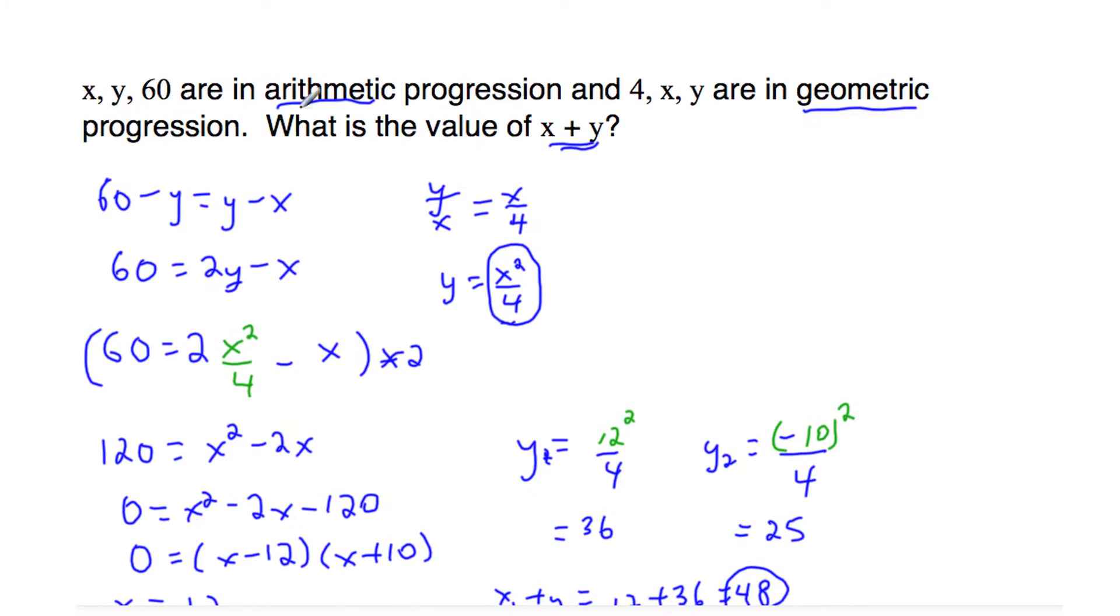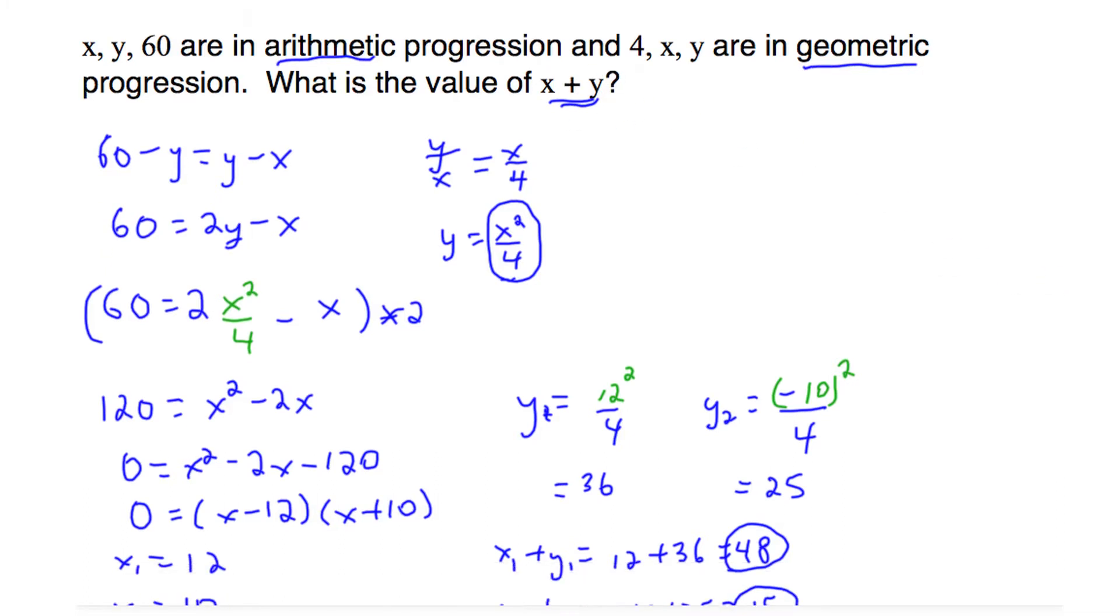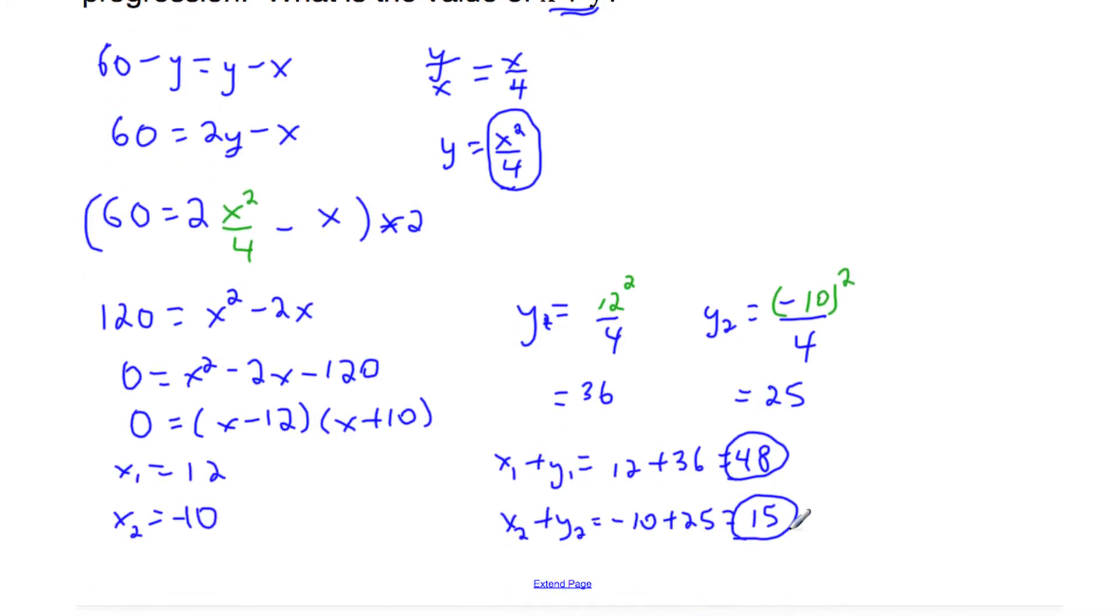So, to summarize, when you're doing an arithmetic progression, the common difference is the same. When you're doing a geometric, the common ratio is the same. Set up two equations with two unknowns. It ends up being a system of non-linear equations, which you can solve. And at the end, remember to add the resulting solutions x plus y, getting 48 and 15.